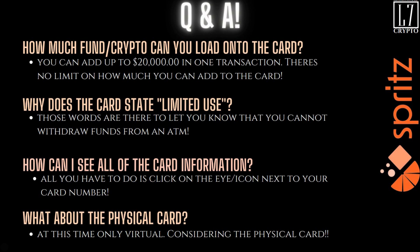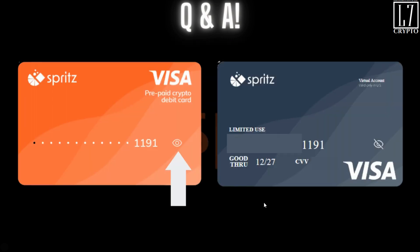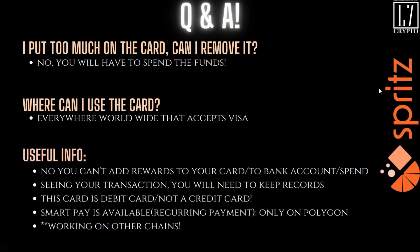Here's the difference between the front of the card and what you see when you click the eye icon — it flips over so you can see everything. As a virtual account, right now it's only available in the US.